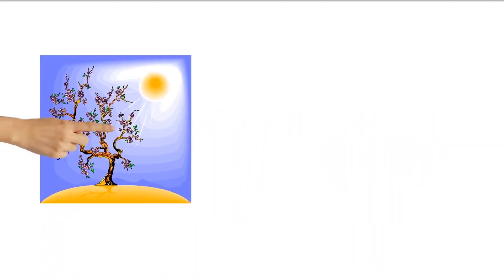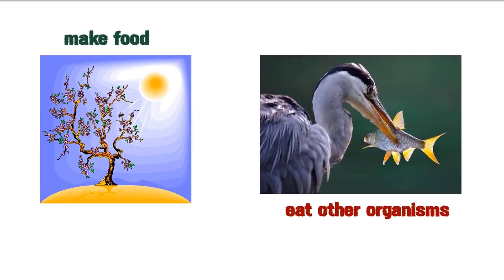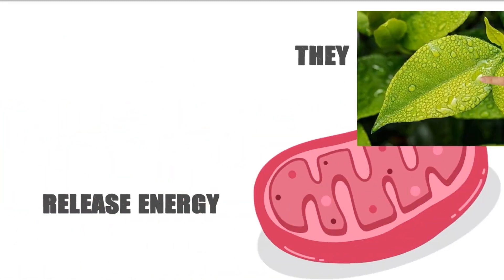Organisms need nutrition. Plants make their own food. Animals eat other organisms. They respire and release energy from their food.